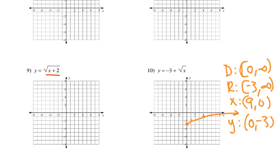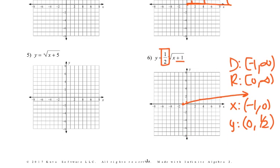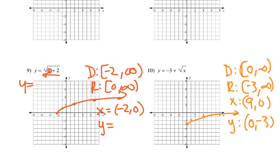Number 9 just has a shift to the left, so it starts at negative 2. Everything else is the same. Domain: negative 2 to infinity. Range: 0 to infinity. X-intercept: (−2,0). For the y-intercept, if x is 0 we get y = √(0+2) = √2, which is about 1.41. So the y-intercept is approximately (0, 1.41).